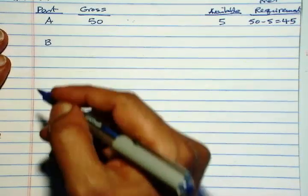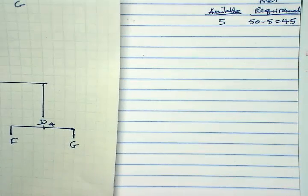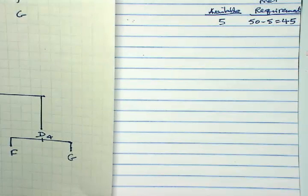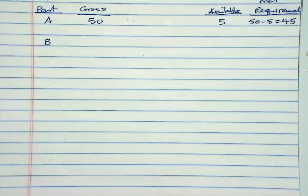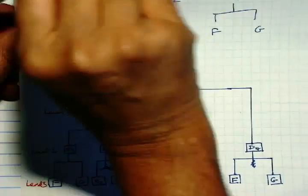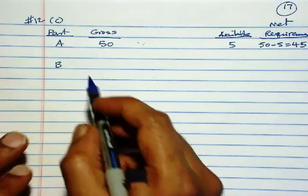Now, we need to proceed with this computation in the order of low level code. Remember the low level codes are in alphabetical order, so we can proceed in the same order. So, B.